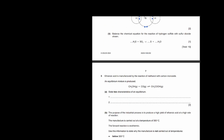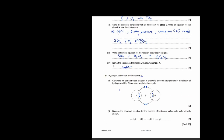Balance the chemical equation for the reaction of hydrogen sulfide with sulfur dioxide. SO2 is already given. There are two oxygen atoms on the left, so you need two water molecules on the right to balance oxygen. Two water molecules means four hydrogen atoms, so you need 2 H2S on the left. Count sulfur: two from H2S plus one from SO2 gives three sulfur atoms. The balanced equation is: 2H2S + SO2 → 3S + 2H2O.